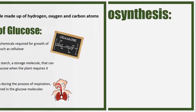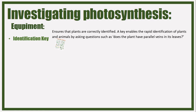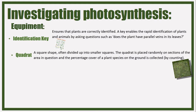Now, investigating photosynthesis. The equipment you'll need includes an identification key - a card telling you all the different species so you can identify which species of plant you're looking at. Then a quadrat, which is a square divided into several grids - I think it's 100 squares. You place it on top of a ground area and use the squares to calculate the percentage of plants present. You'll also need a light meter, which measures how much light there is in units of lux.